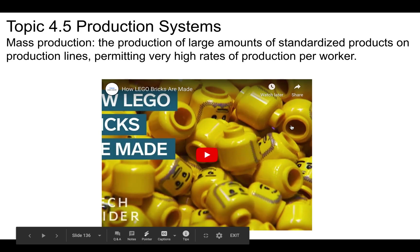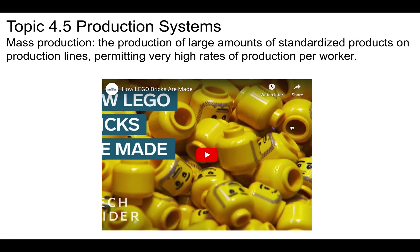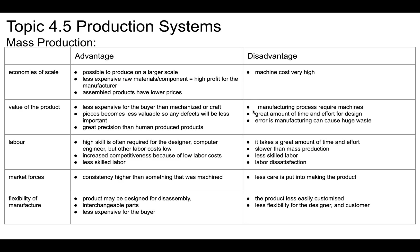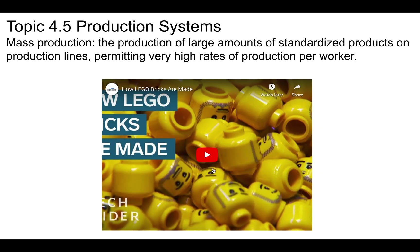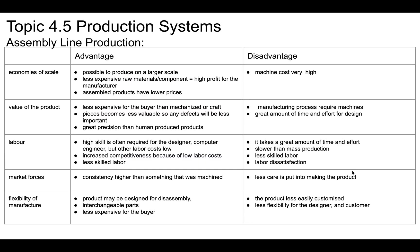That takes us to mass production. This is a production of large volumes of standardized products on production lines, permitting high rates of production per worker. This is an example of a Lego factory — you can have a quick look at how production of Lego looks.